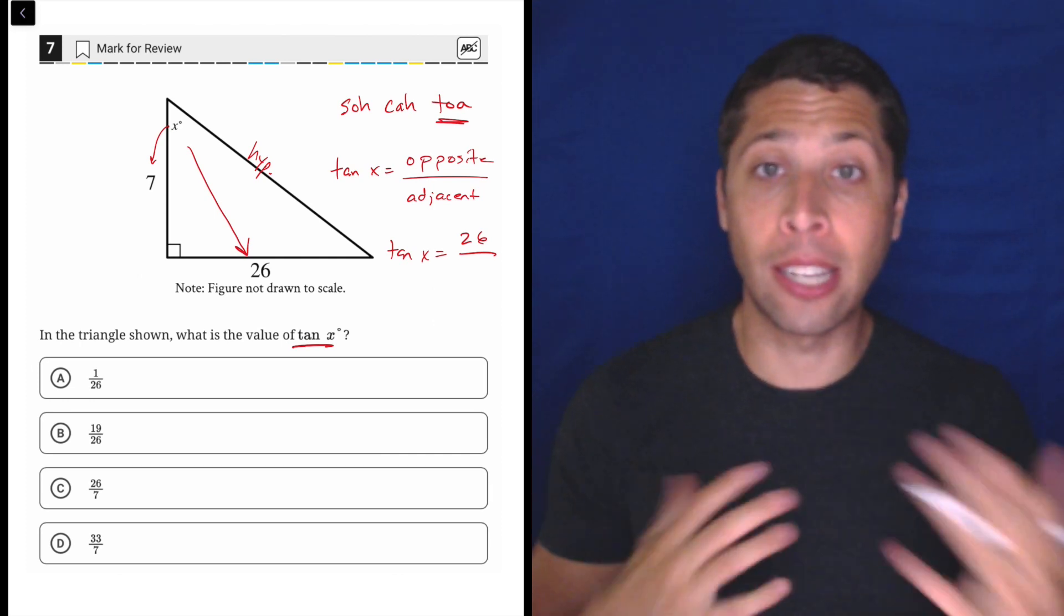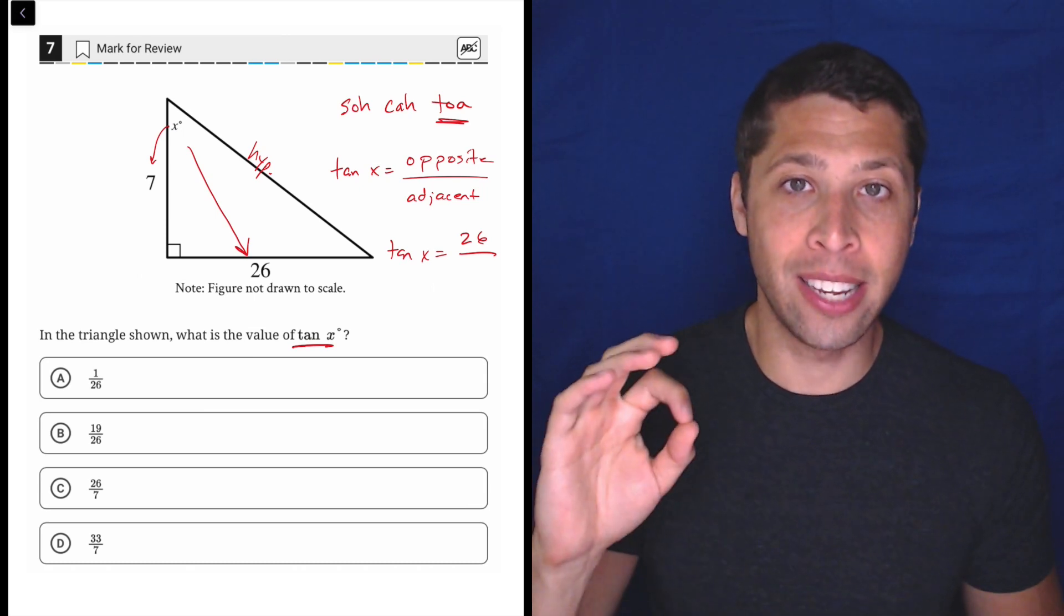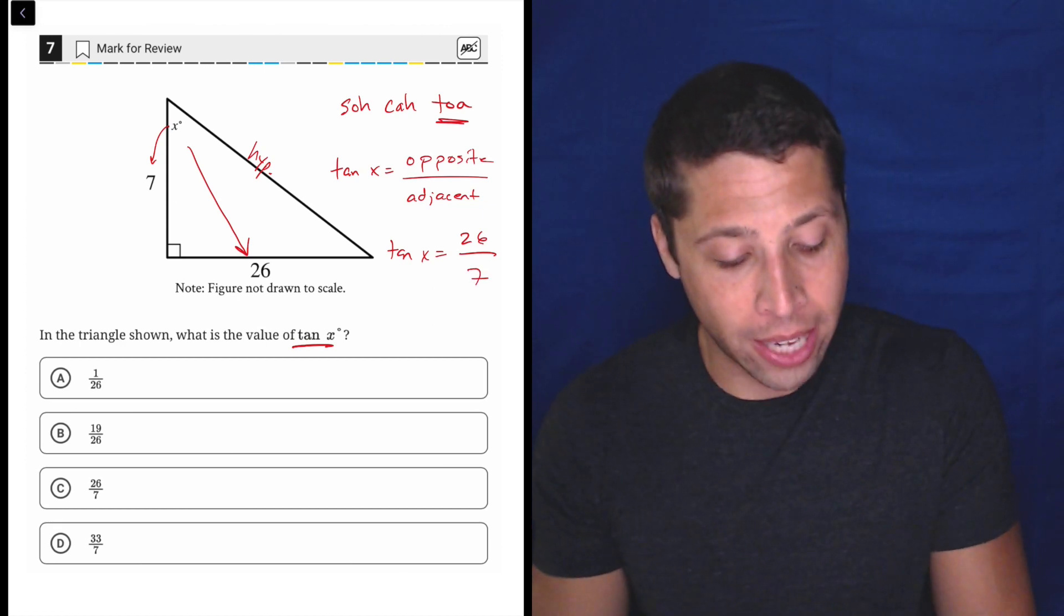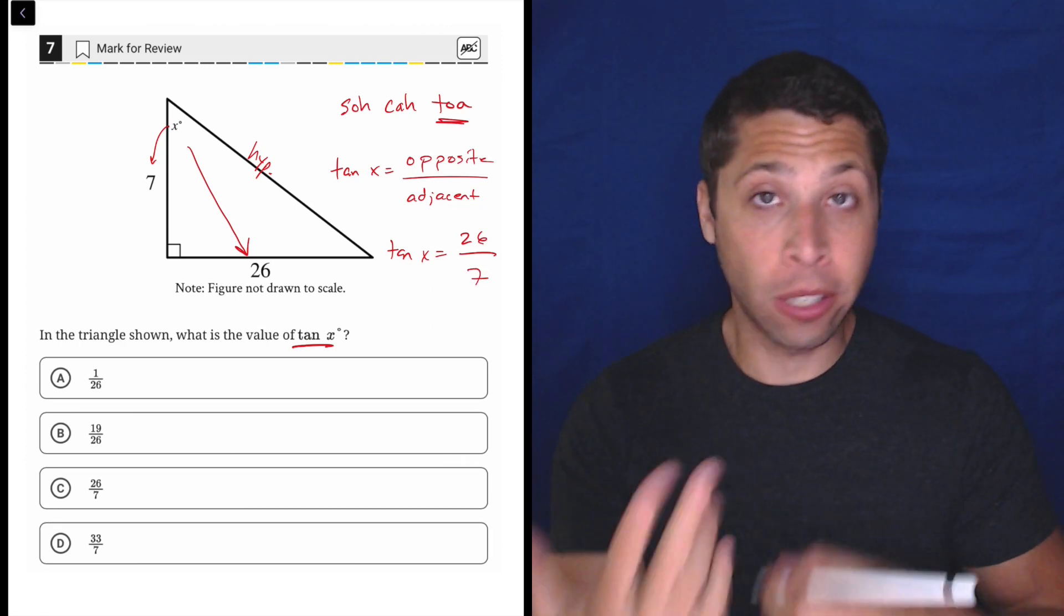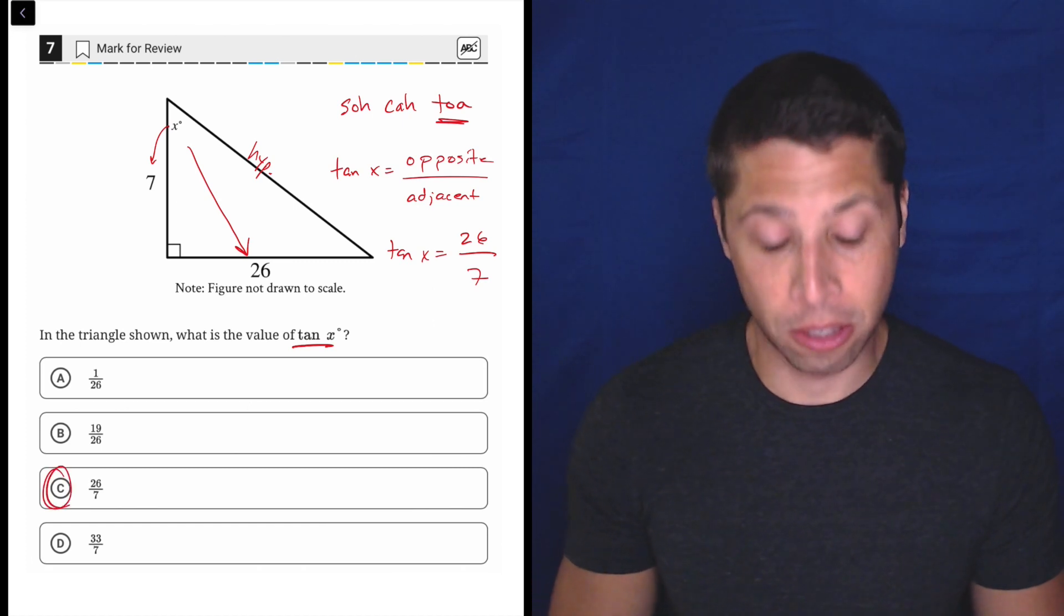The adjacent and opposite sides will switch depending on where we're located. But remember, the adjacent side is the side that makes up the angle that's not the hypotenuse, so that's why it's seven. And then there you go. There's no other conversion we need to do here, nothing we need to put in the calculator. Tangent of X is 26 over 7.